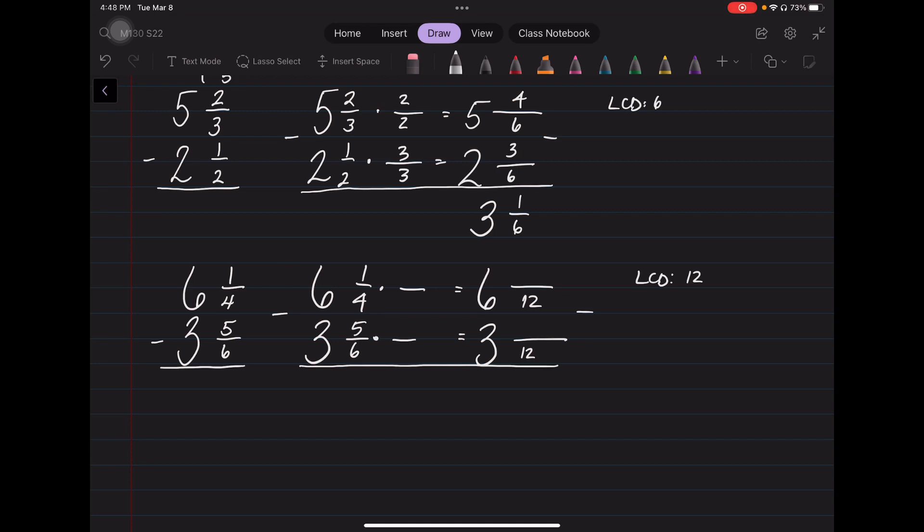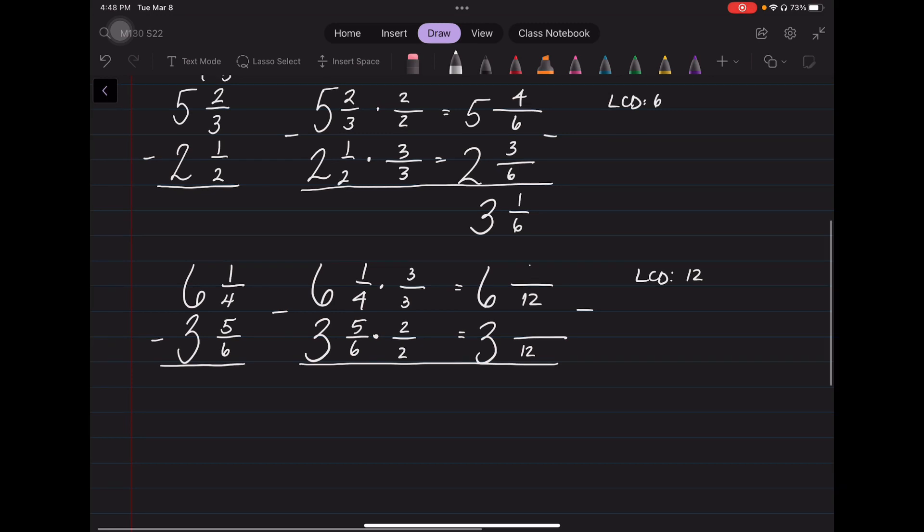That means I'm going to need to multiply 4 by 3 over 3, or 4 by 3 to get 12. And then 6 by 2 to get 12, so I multiply by 2 over 2. Because remember, I have to change the numerator as well. 1 times 3 is 3. 5 times 2 is 10. That means that I have the subtraction problem of 6 and 3 twelfths minus 3 and 10 twelfths.